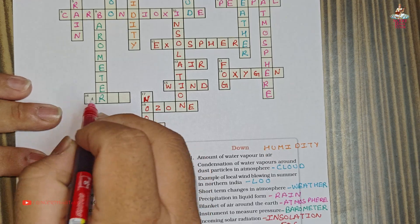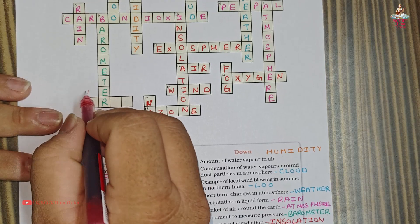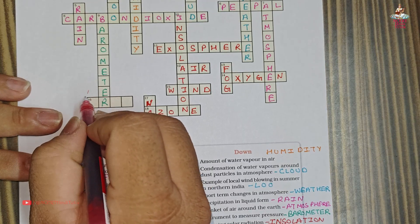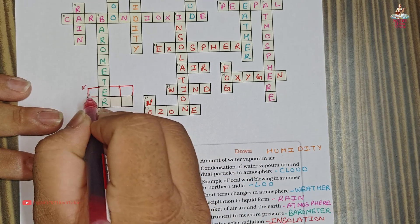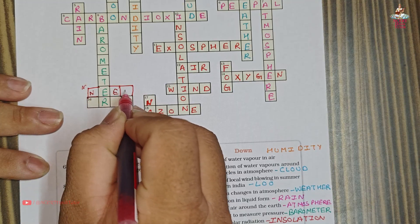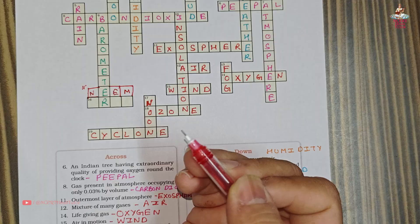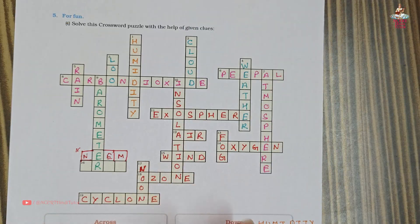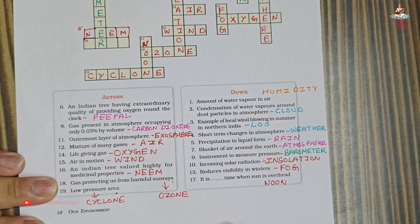Friends, there is some error here — I think sixteen should be repositioned and 'neem' written there. This might be an error. We have completed the crossword. You can see the solution and note it down by pausing the video.